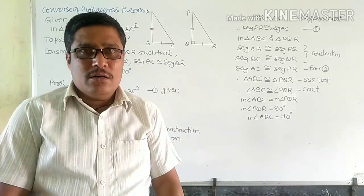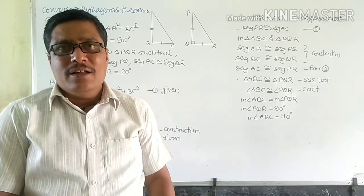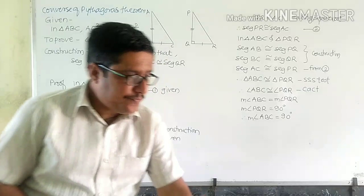Now, we are going to learn about the Converse of Pythagoras Theorem. The statement of this theorem is: in a triangle, if the square of one side is equal to the sum of squares of the remaining two sides, then the triangle is a right angle triangle.